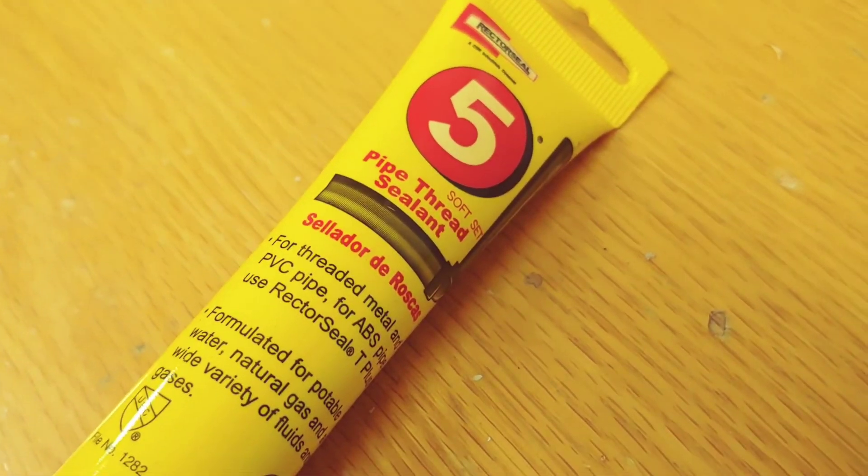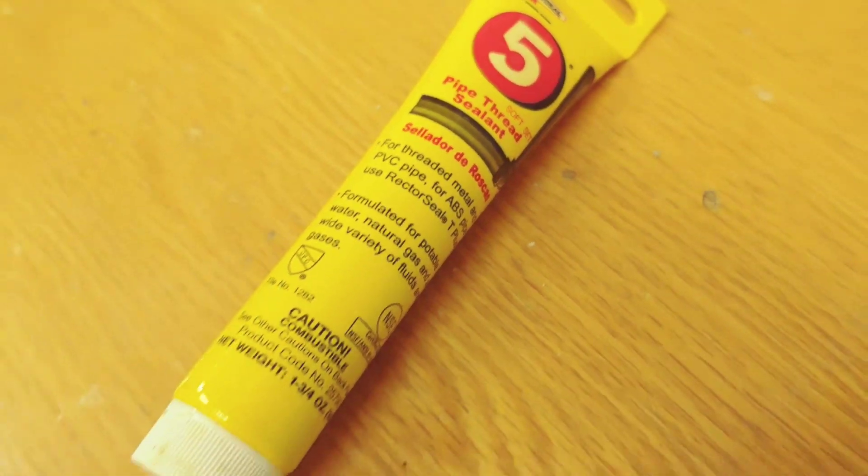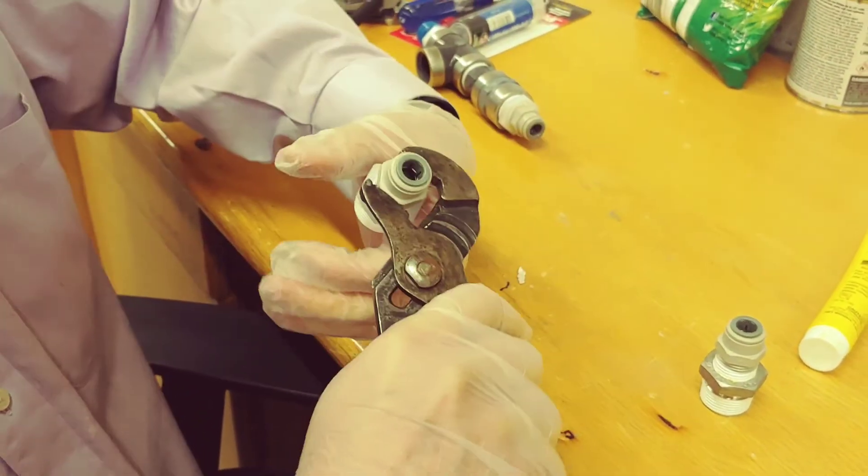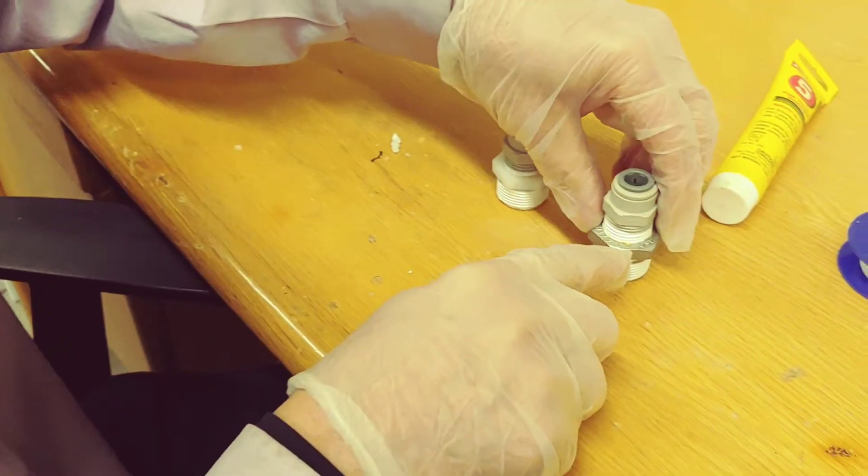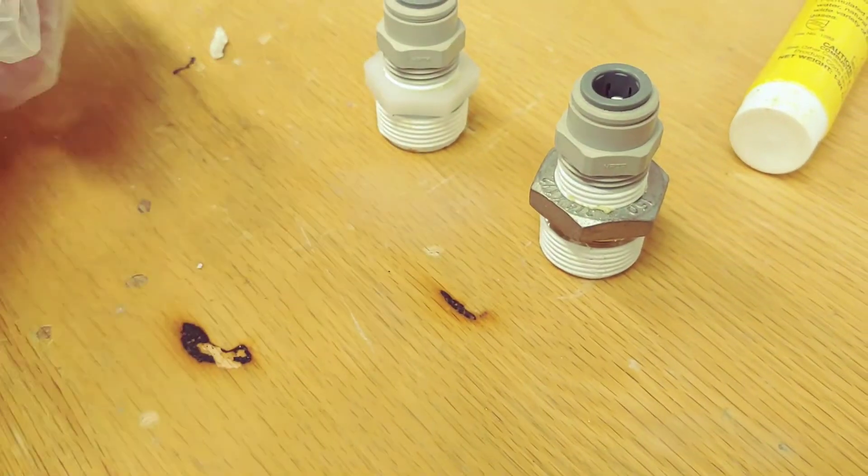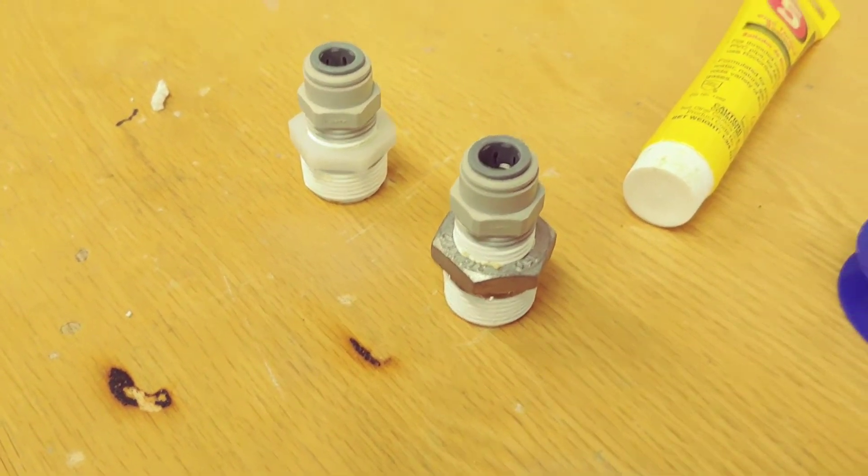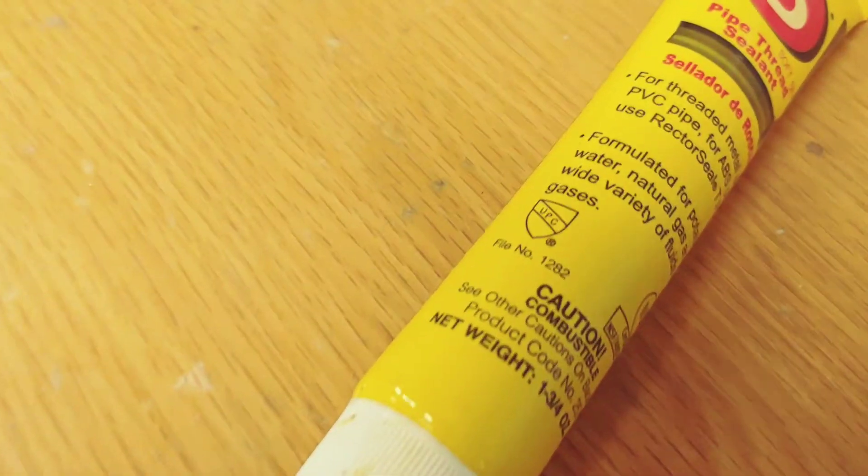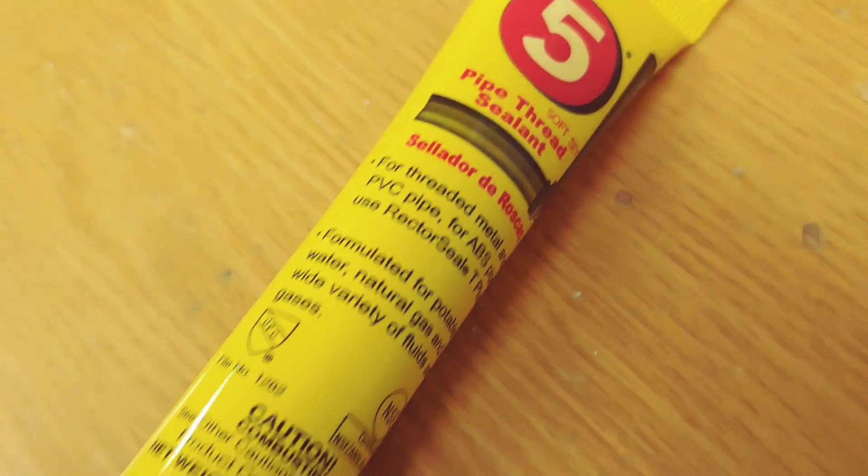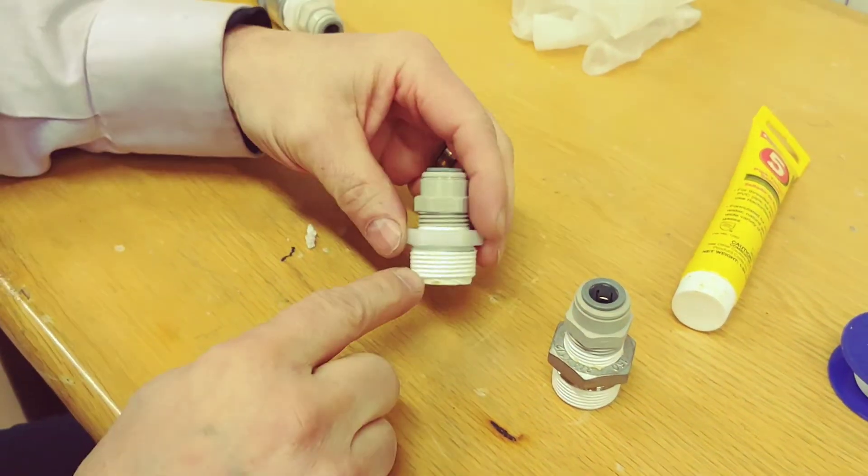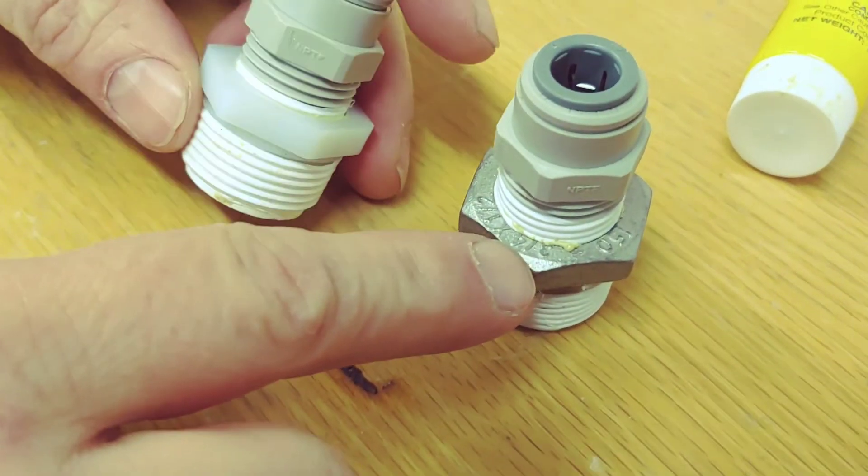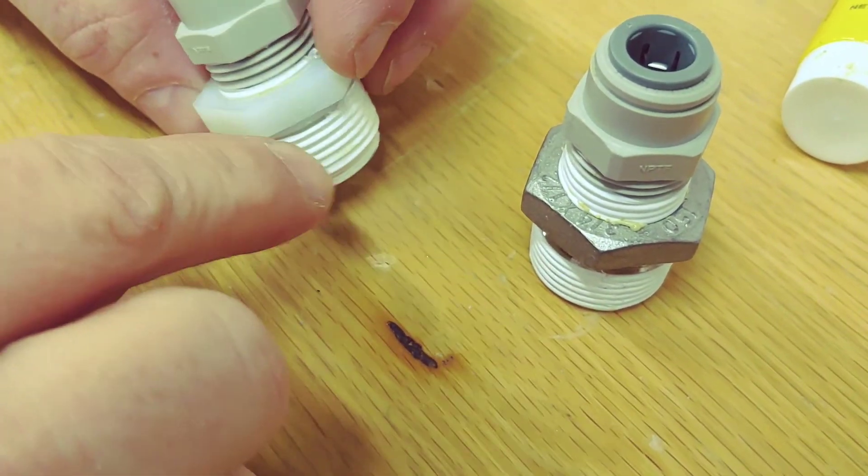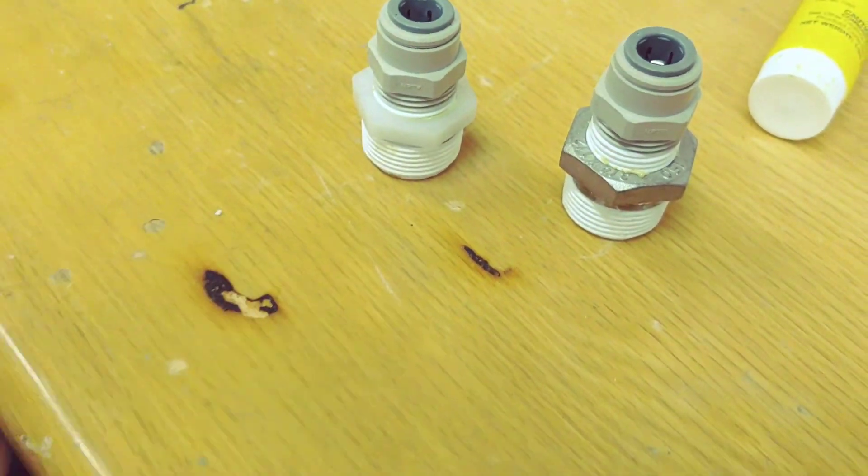See the squishing out right there? You see it a little bit squished out? Now you might think, why do I not put paste on the outside of the Teflon tape? It's because it does squish out, just like that. And that gets both threads squishing out.